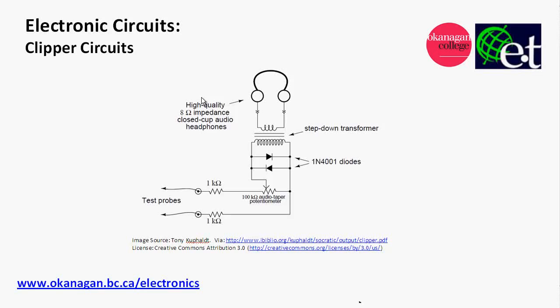Hello, it's David Williams from the Electronic Engineering Technology Department at Okanagan College. The video today is on clipper circuits. A clipper circuit is a circuit that either cuts off or clips a part of an AC signal. Diodes are typically used to do this. This circuit here is designed to prevent a signal from driving these headphone speakers too loudly, and these two diodes will clip off any signal above their particular forward voltage.